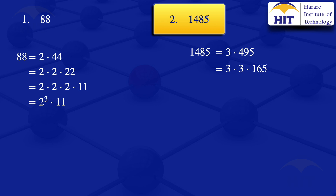We check the factors of 165 starting with the smallest prime number. 2 is not a factor of 165, so we move on to 3. The 3 is a factor of 165, and we can write 165 = 3 × 55. Our expression therefore becomes 3 × 3 × 3 × 55.